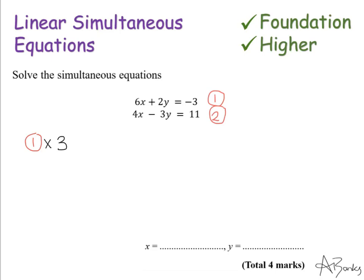And this means I need to multiply everything in the equation by 3. So 6x times 3 is 18x. 2y times 3 is 6y. And minus 3 times 3 is minus 9. So this gives me a new equation. I'm going to call this equation equation 3.